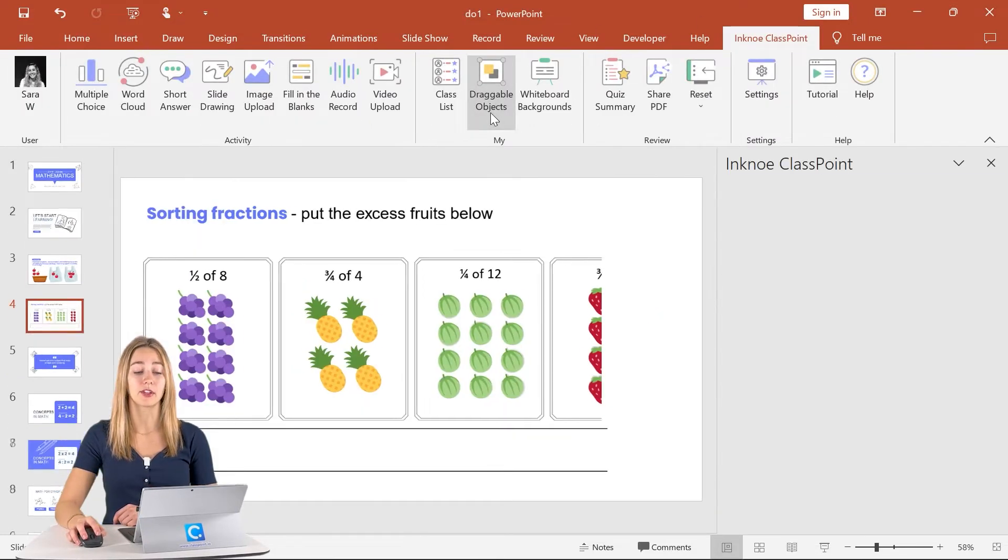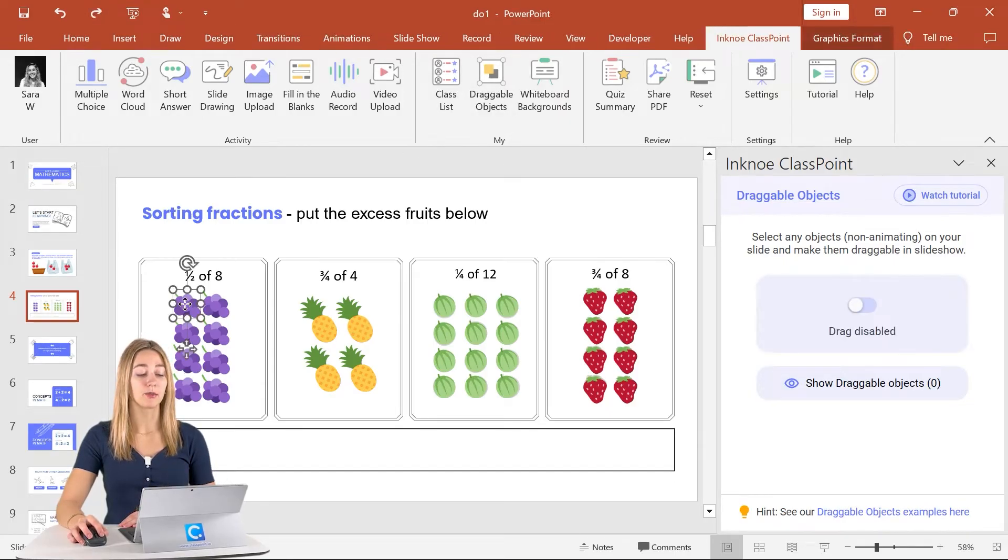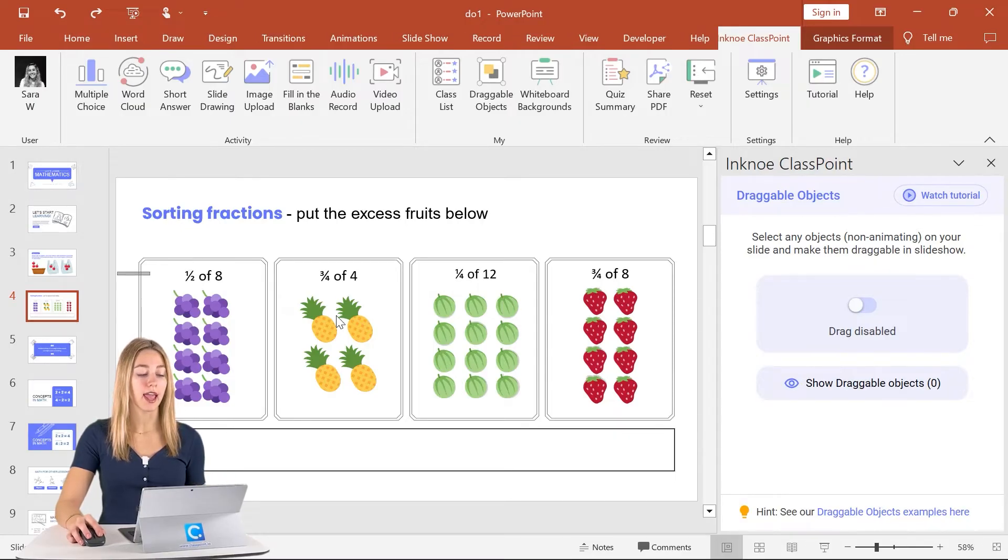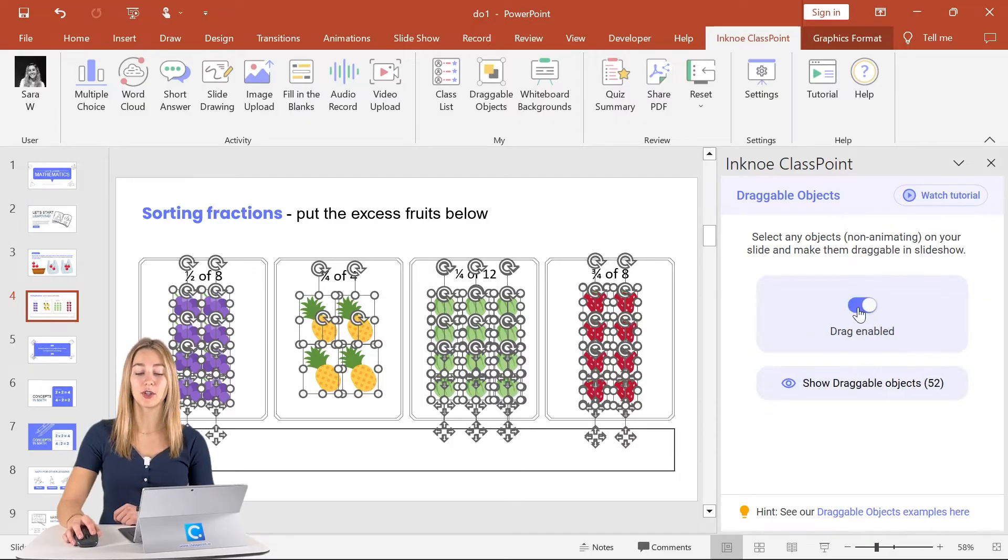Then we only have to click the draggable objects icon and that side panel will open up. We can go ahead and select the objects that we want to be draggable during our presentation. If you have more than one, you can hold down the shift key and then select some objects, or just highlight all the objects that you want to use. Then we click the toggle to drag enable these objects. You'll see a quick highlight box to show you which ones are enabled. But if you ever forget or want to double check which ones are enabled, you can click this eye icon and it will quickly show you which ones they are.